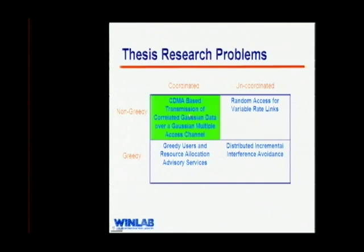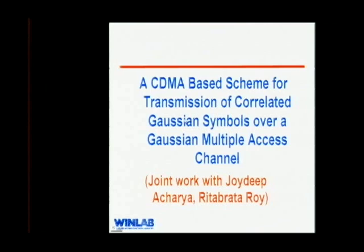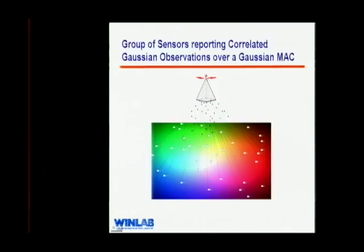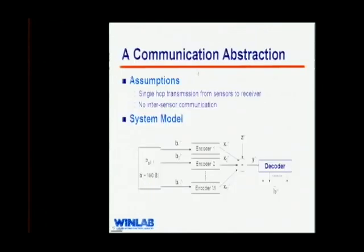After this framework, I have looked at four main problems. The first problem is CDMA-based on a multiple access channel — transmission of correlated Gaussian symbols over a Gaussian MAC, joint work with Joydeep and Ritha Brotharoy. The physical scenario is: you have a field with a physical process like temperature, sensors measure this and report to a central entity. Because there is only one physical process, the sensor measurements are highly correlated. The communication abstraction assumes single-hop transmission from sensor to receiver with no multi-hop and no inter-sensor communication.